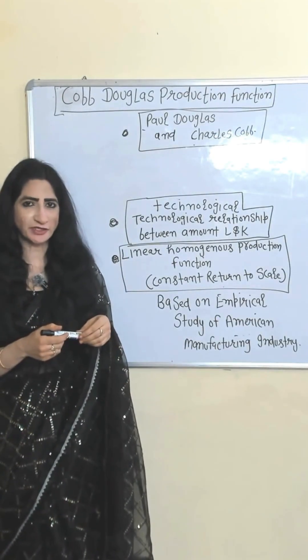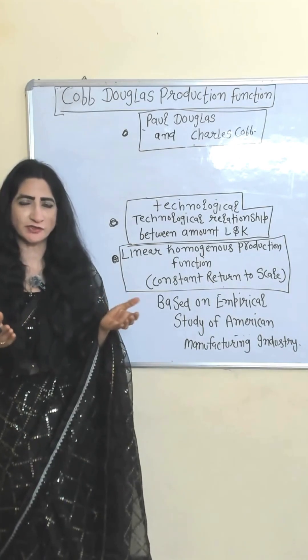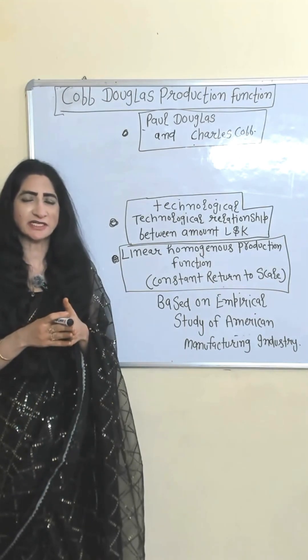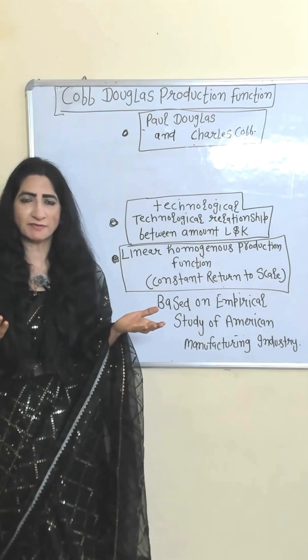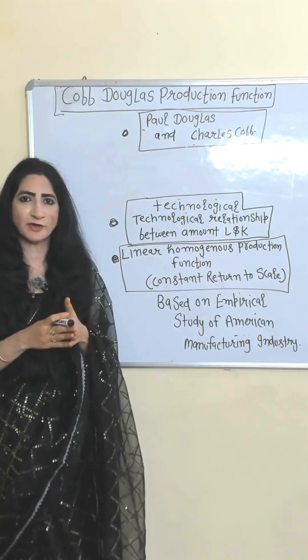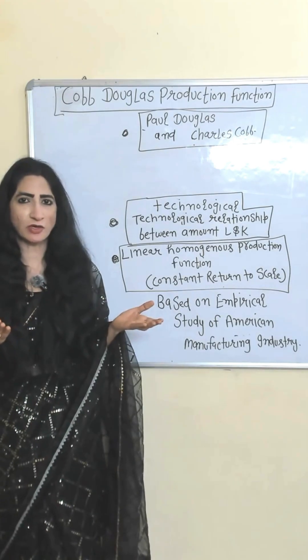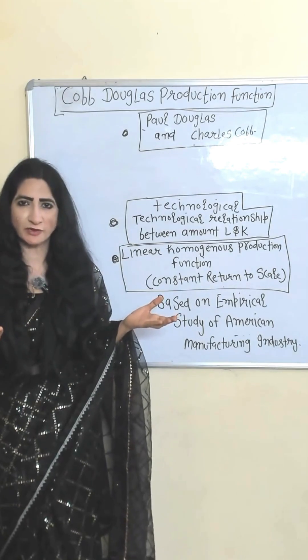Hi, Cobb-Douglas production function given by economist Paul Douglas and mathematician Charles Cobb. This production function based on empirical study of American manufacturing industry shows technological relationship between amount of labor and capital.